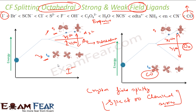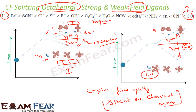You can see there are three orbitals here in the t2g group. Please note: it is not strong and weak ligands, it is strong and weak field ligands.